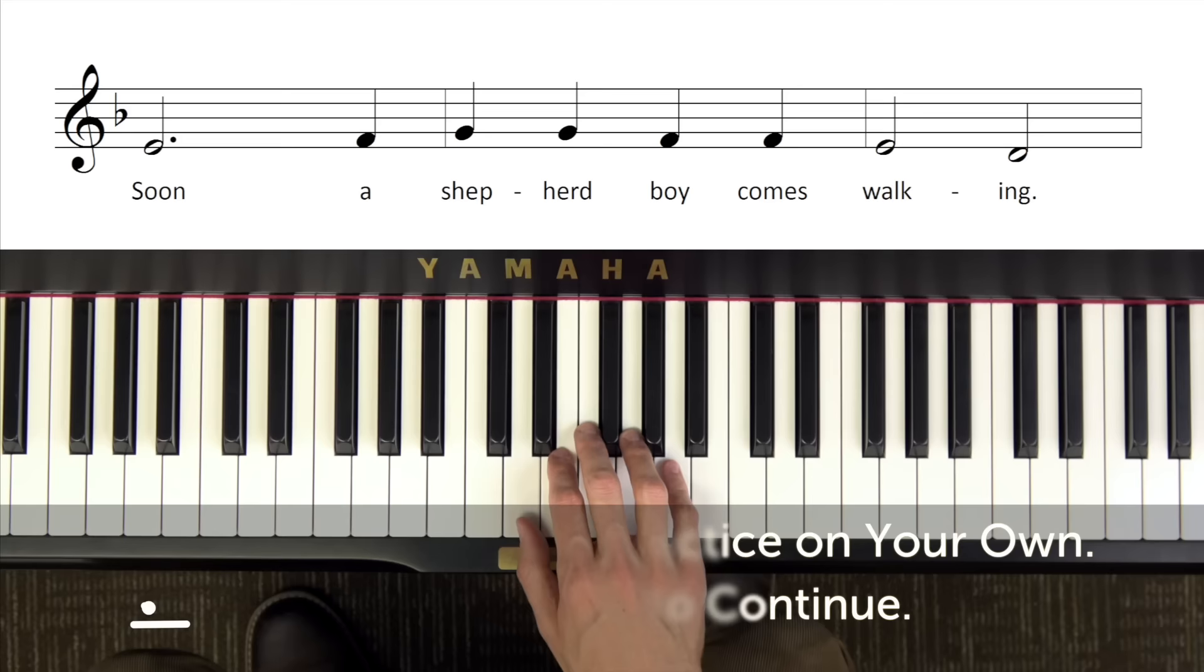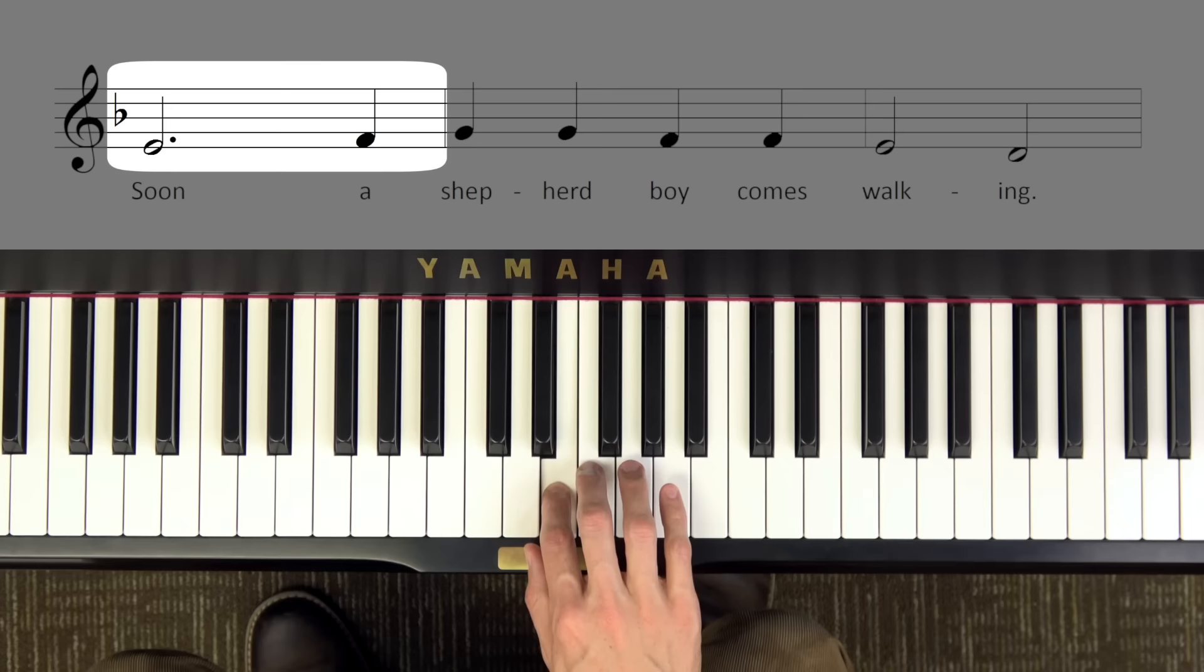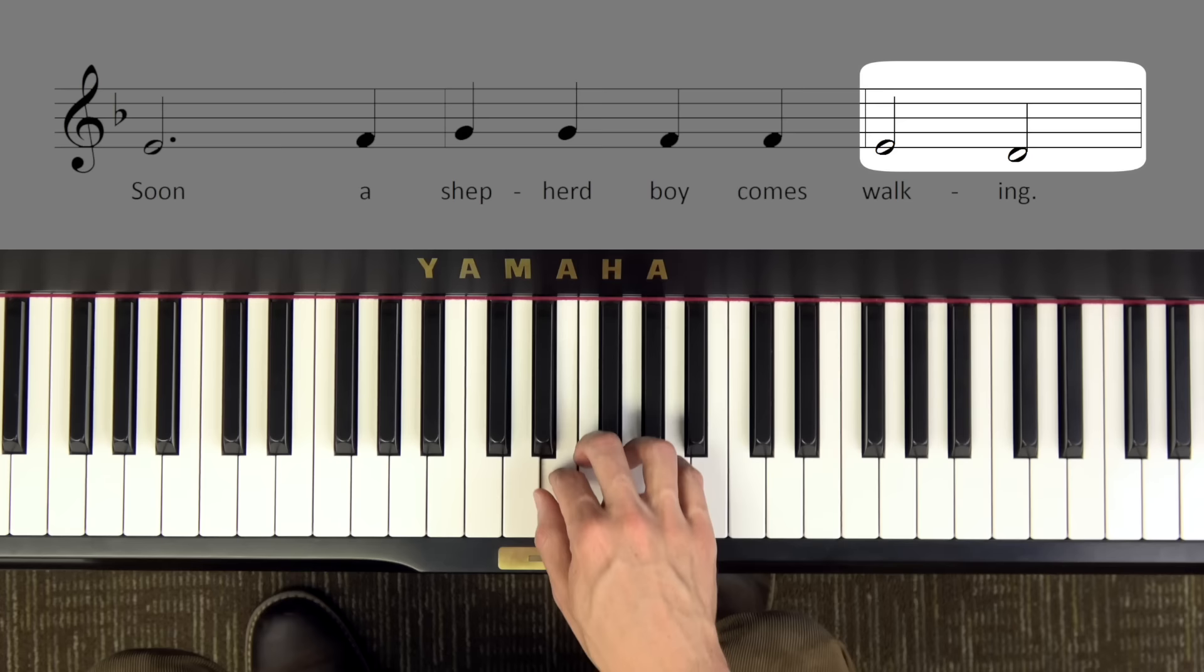Great, now let's try line three together. We're going to start with finger two on E. Remember to count three beats. Ready, go. One, two, three, F, G, G, F, F, E, D. Good.